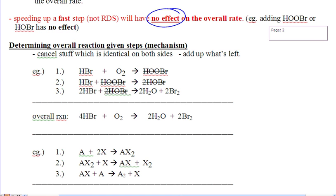What are we doing with this stuff? First thing first is you are going to be given a series of steps like I have here. One, two, three. And you are going to be asked to come up with the overall reaction. You do so by simply canceling off the things that are the same on either side. There is a HOOBr on either side and a couple of HOBrs on either side. If they are the same on either side, you can cancel them off. You will notice that there are now four HBr's, one O2, two H2O's, and two Br2's. Whatever is left over after you cancel off creates the overall reaction.